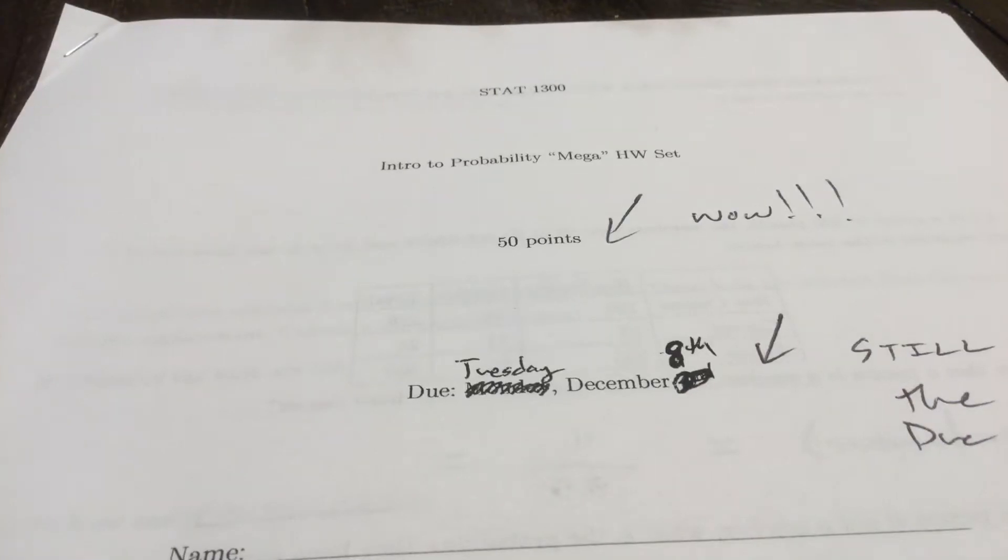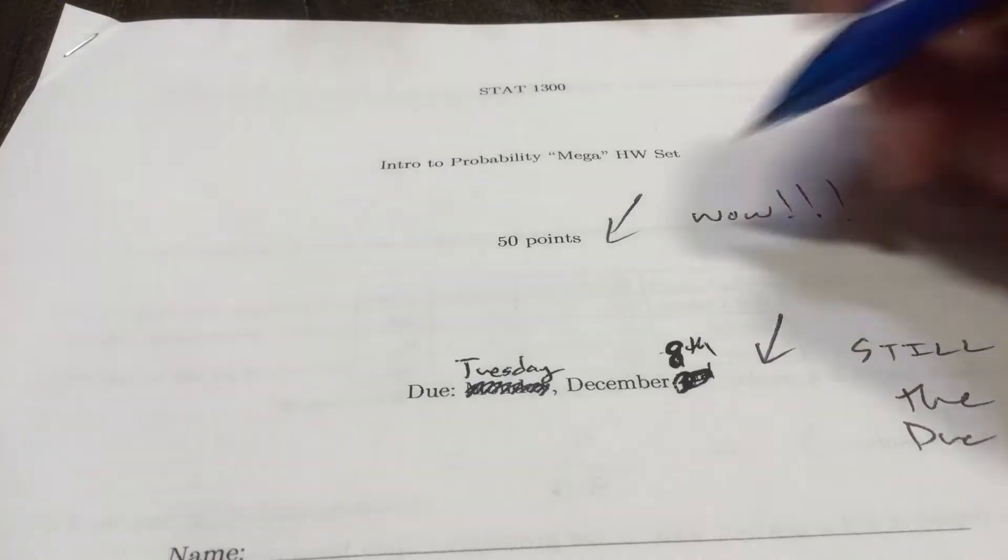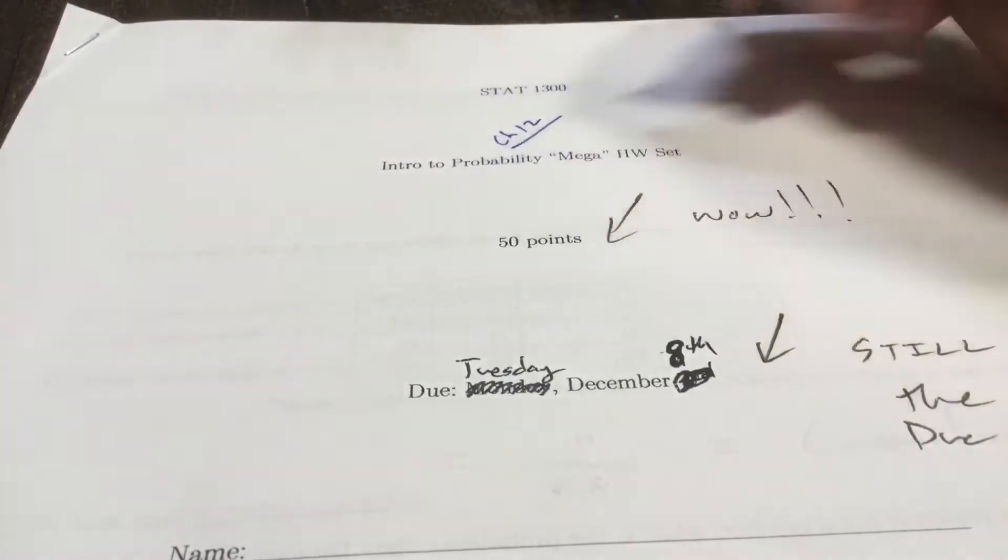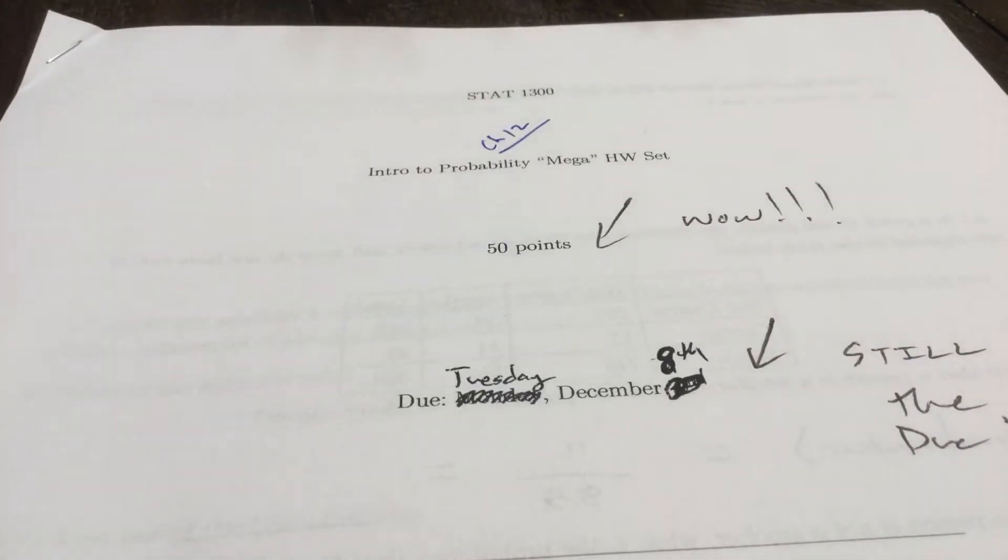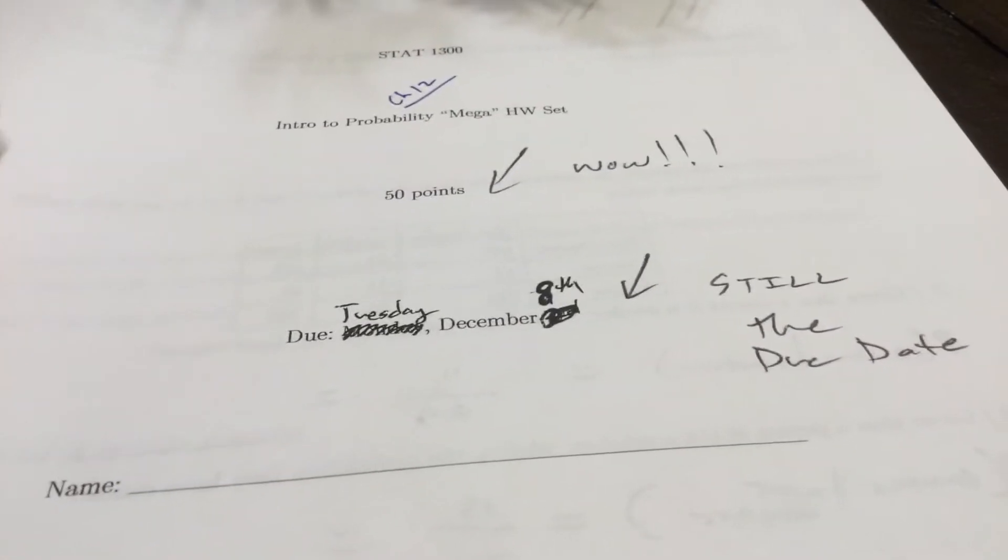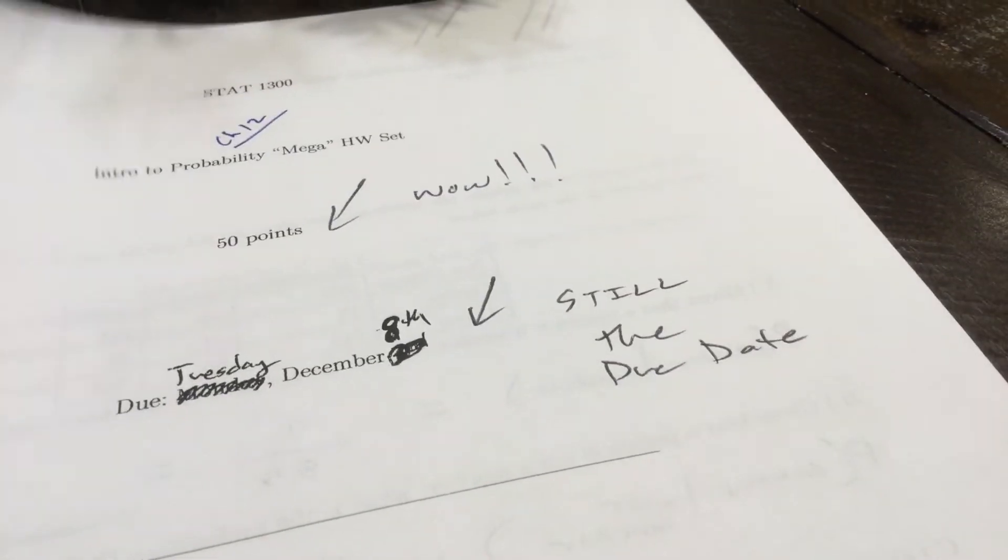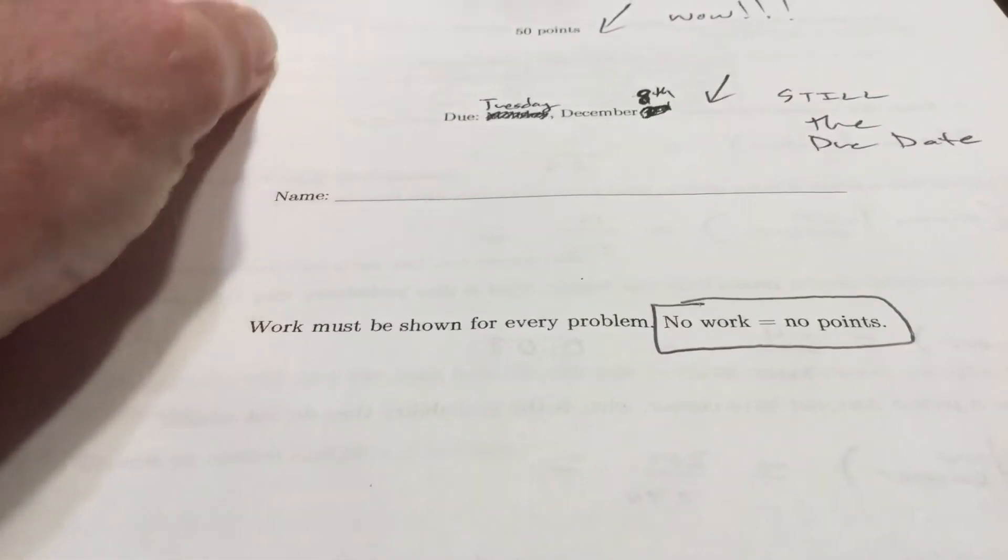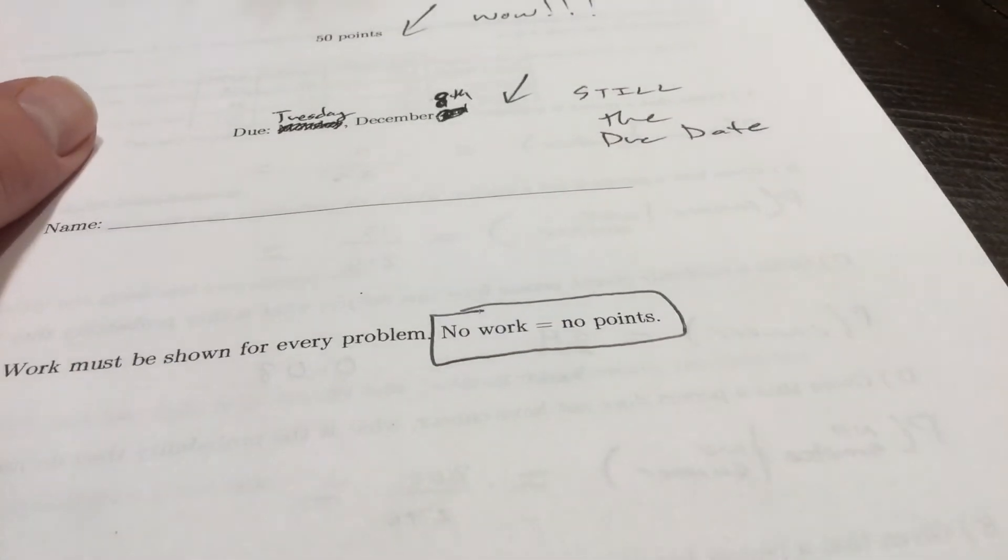All right stats, welcome to a little video for your Chapter 12 mega homework. This is Chapter 12 mega homework set worth 50 points. Triple exclamation marks there. Still due on Tuesday. No matter what, work must be shown for every problem. No work equals no points.